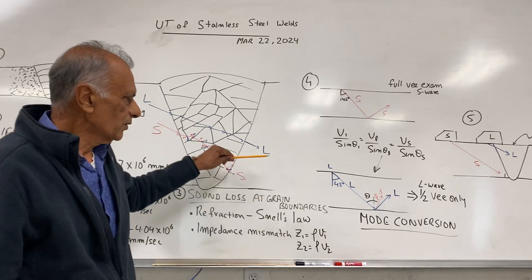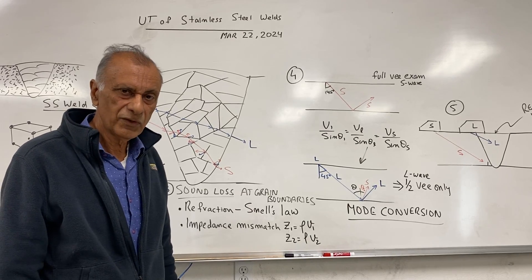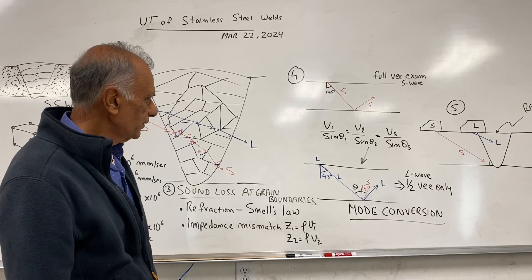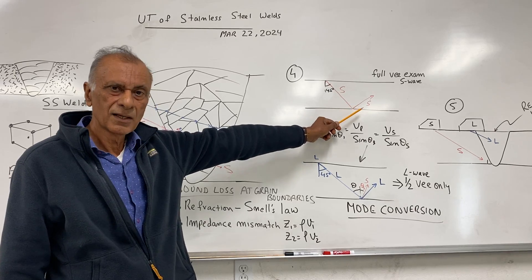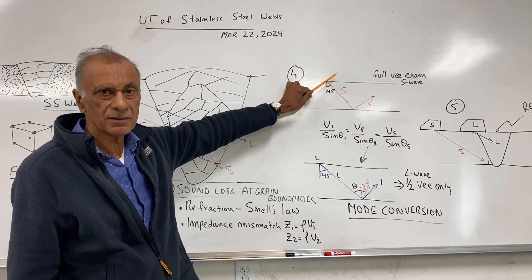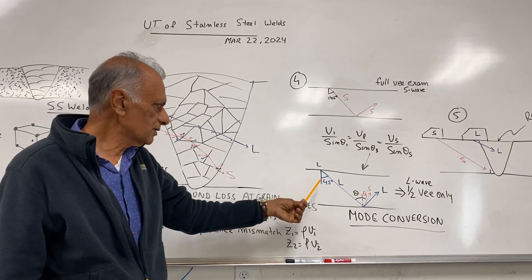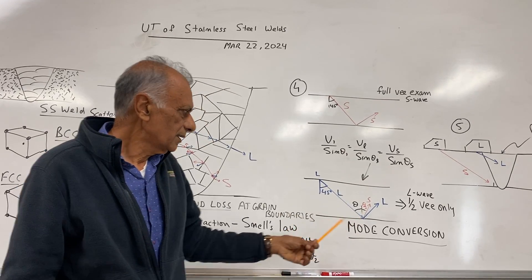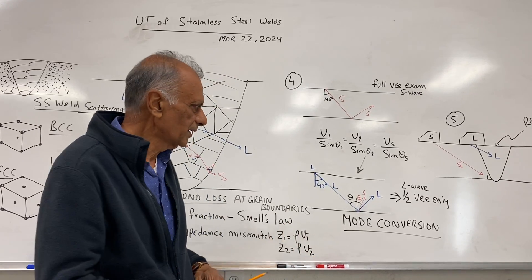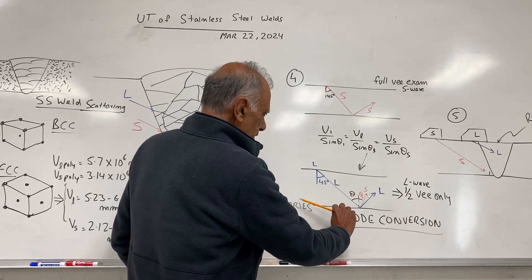Why is it difficult to use L-wave? Typically for carbon steel weld inspection we use shear waves, not refracted L-waves, because shear waves are reflected 100% at the pipe surfaces — at the OD and ID — allowing a full-V exam with no loss of sound. When we use L-waves, however, because of the relationship between L-wave and shear wave velocities, there is mode conversion: the L-wave splits into a shear wave and an L-wave on reflection, and if there is a discontinuity the returning sound splits again into L-wave and shear wave.